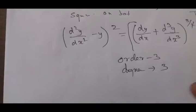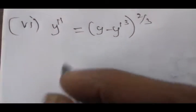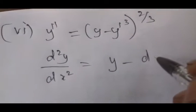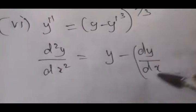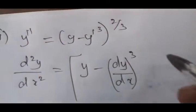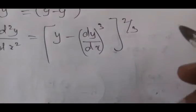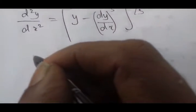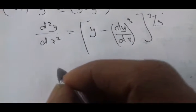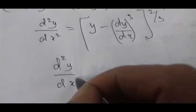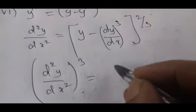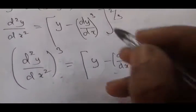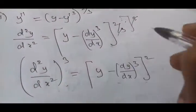The sixth problem: y'' — d²y/dx² — equals minus dy/dx, cube, whole power 2/3. The pin number (fractional power) is removed. The power will be 3 to cancel. Cube on both sides: d²y/dx² whole cube equals the right side cubed.